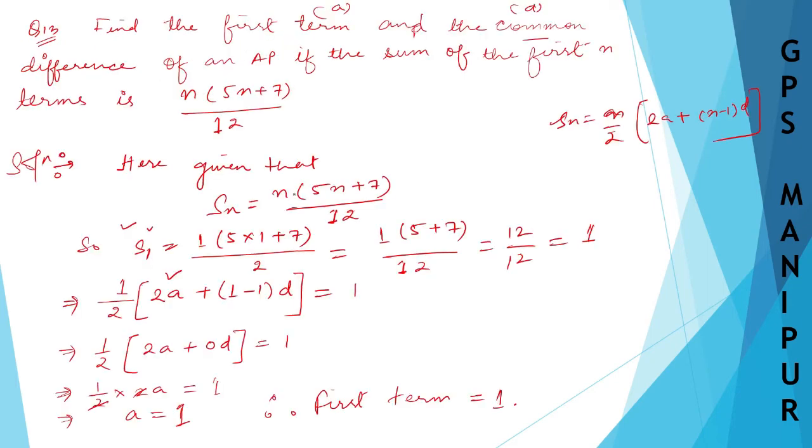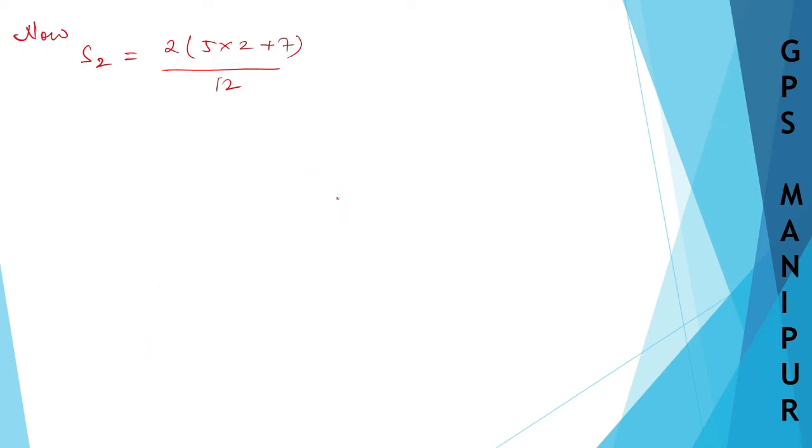Where are we putting 2? Instead of N here, S N is equal to N 5N plus 7. Instead of N, put 2, 2 into 5 into 2 plus 7 divided by 12. That is what I have written, 2 into 5 into 2 plus 7.